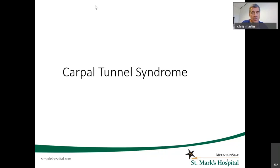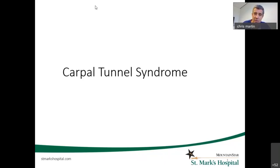So carpal tunnel is an actual anatomic space. It's named after the anatomy of the carpal bones, or the small bones that make up the wrist or the carpus. And if we look at these in an axial plane, they actually do form a tunnel. These are the four bones. The ridge of the trapezium here is actually out of this plane, and over here the hook of the hamate comes up out of the plane, so that forms the U shape.